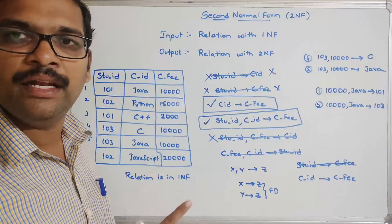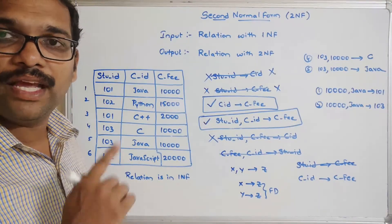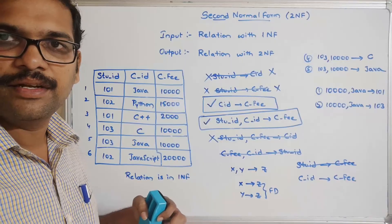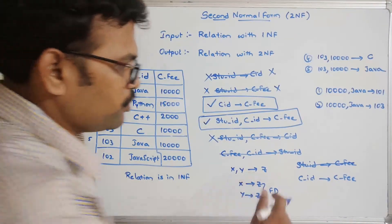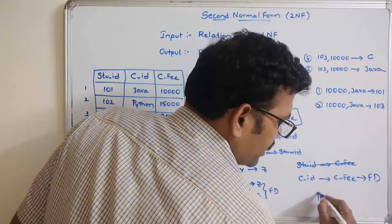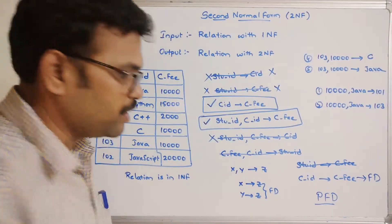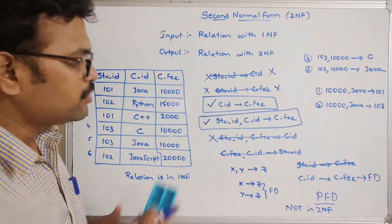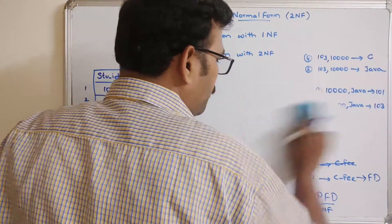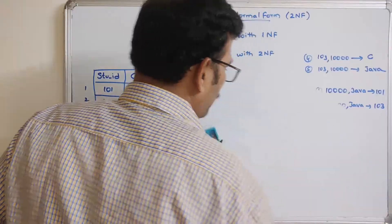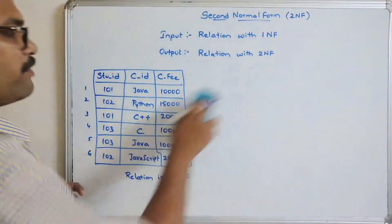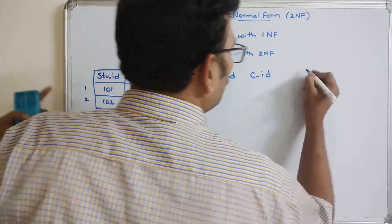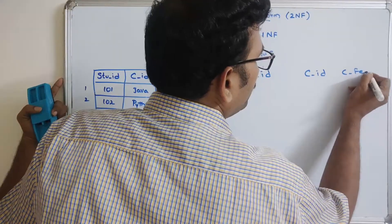Since this relation has a partial functional dependency, it is not in 2NF. To achieve 2NF, we have to decompose this table into two different sub-relations. The sub-relations are: one with student ID and course ID, and another with course ID and course fee.